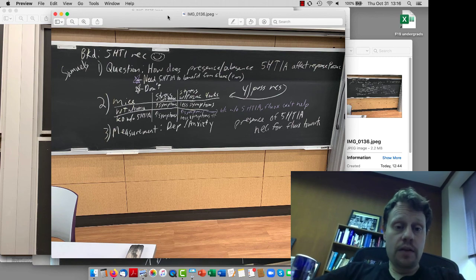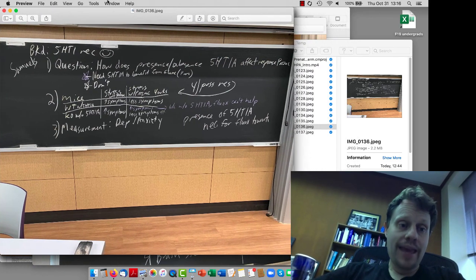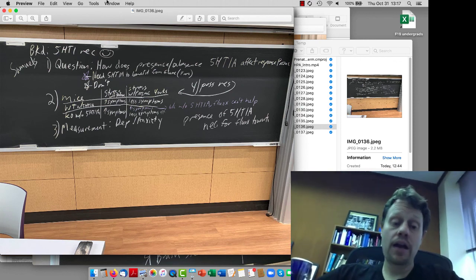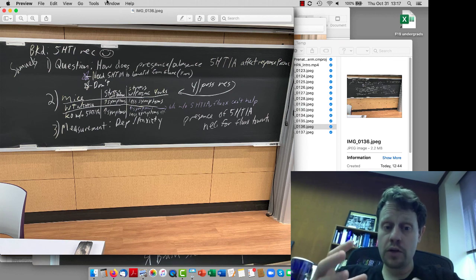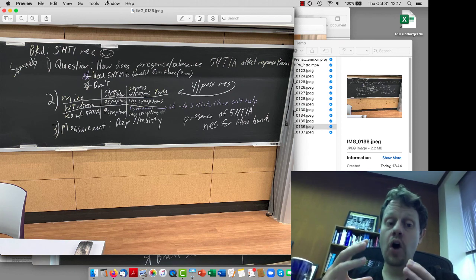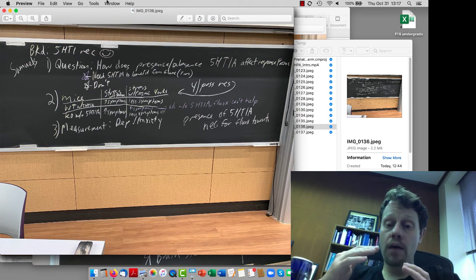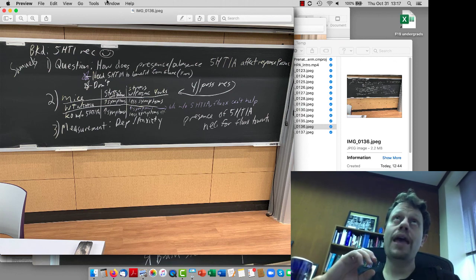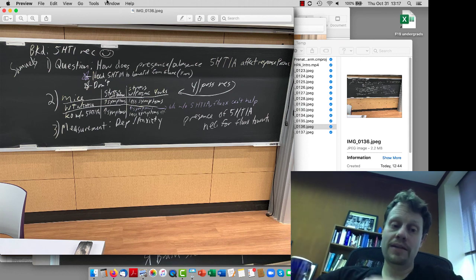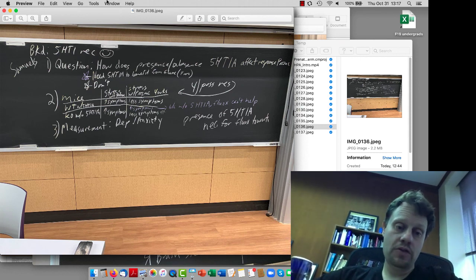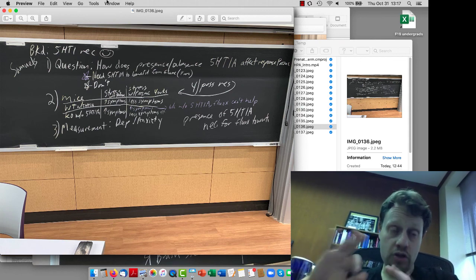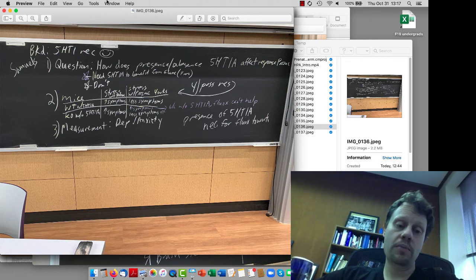The second study that we looked at was one by Samuels. In this study, it was all in mice. All of the mice were exposed to a lot of chronic stress. So all of the mice had decreased motivation, decreased activity, decreased mobility, and decreased desire to go into exposed spaces. Those are the symptoms in the mice that we're measuring. So if we have stressed out mice, normal mice that we stress out, then they show those decreased mobility and decreased venturing out into open exposed spaces.